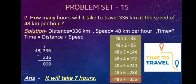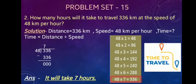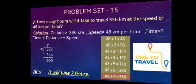Now we start to divide 336 by 48. The first digit 3 is less than 48, and 33 is also less than 48, so we take all three digits: 336. From the table of 48, 48 sevens are 336, so we write 7 at the quotient place. 336 minus 336 is 0, so quotient is 7 and remainder is 0. The answer is: it will take 7 hours.